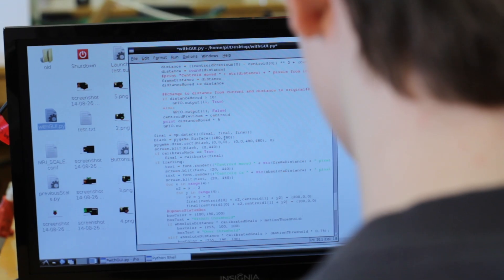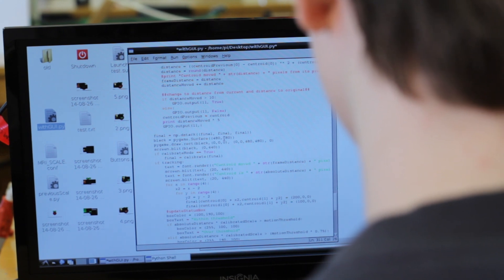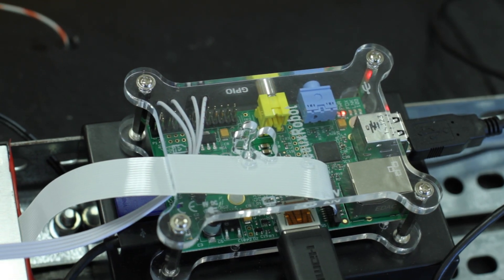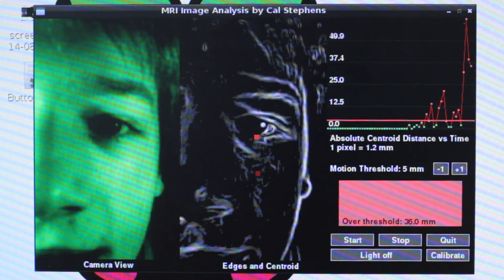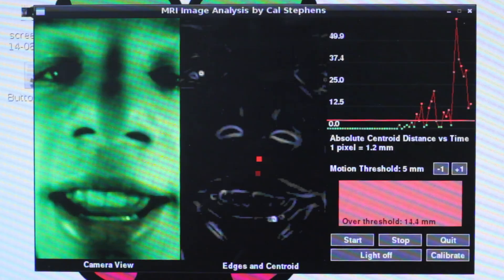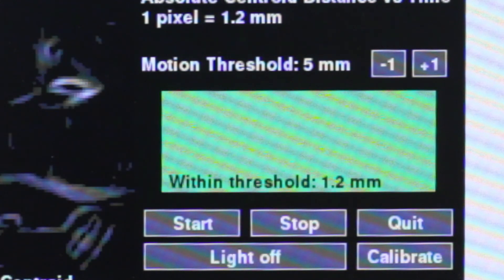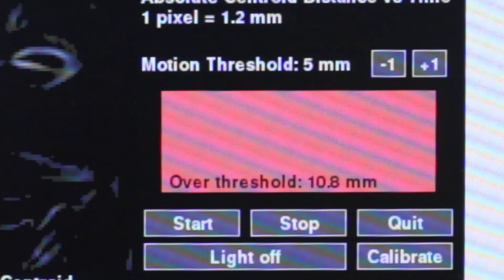After Dr. Hoggart approached me and asked me to take on this project I set out to do exactly that. Written in Python, the application takes images from the Raspberry Pi camera and analyzes those using an edge detection algorithm and then a method called centroid tracking to track the patient's head as it moves around the frame. Using that with the calibrated scale in terms of pixels per millimeter, we can get exactly how many millimeters the patient has moved throughout the trial.